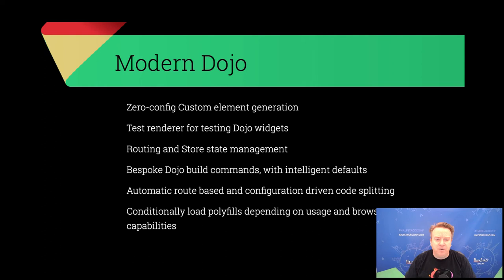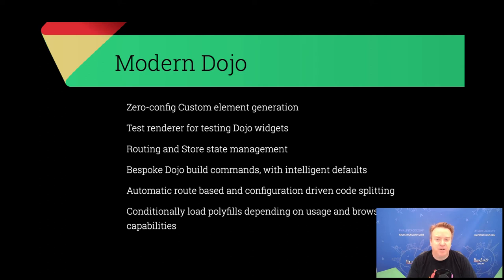We have done quite a few things around custom elements, also known as web components. If you create a component or an application in Dojo, you can export it with zero configuration as a custom element for use in other applications. We have a test renderer that makes it really efficient and easy to test VDOM-based Dojo components, and we have a modern approach to state management — it might seem like Redux but it has quite a different structure for how we separate operations, processes, and things like that.